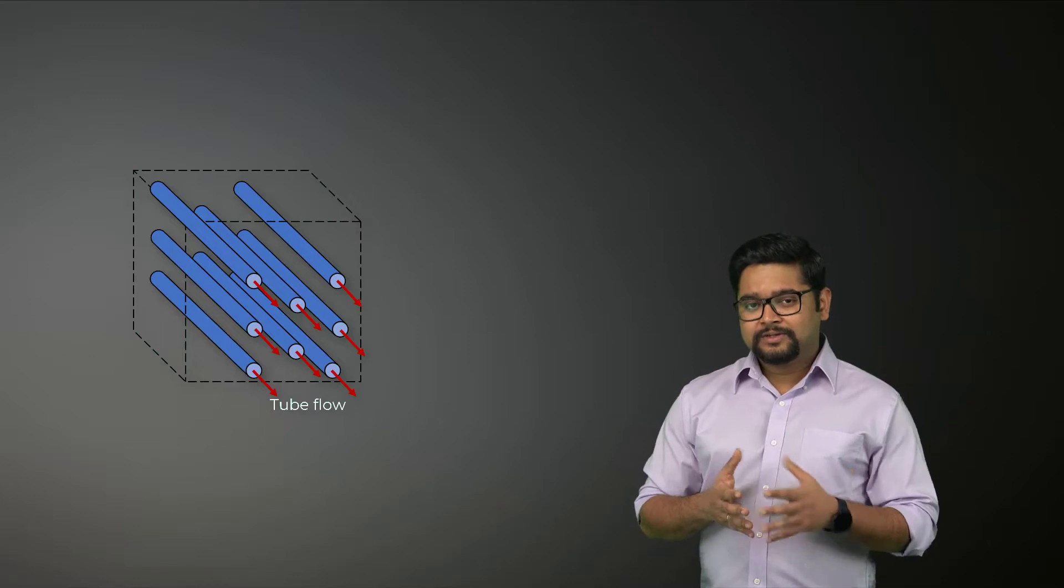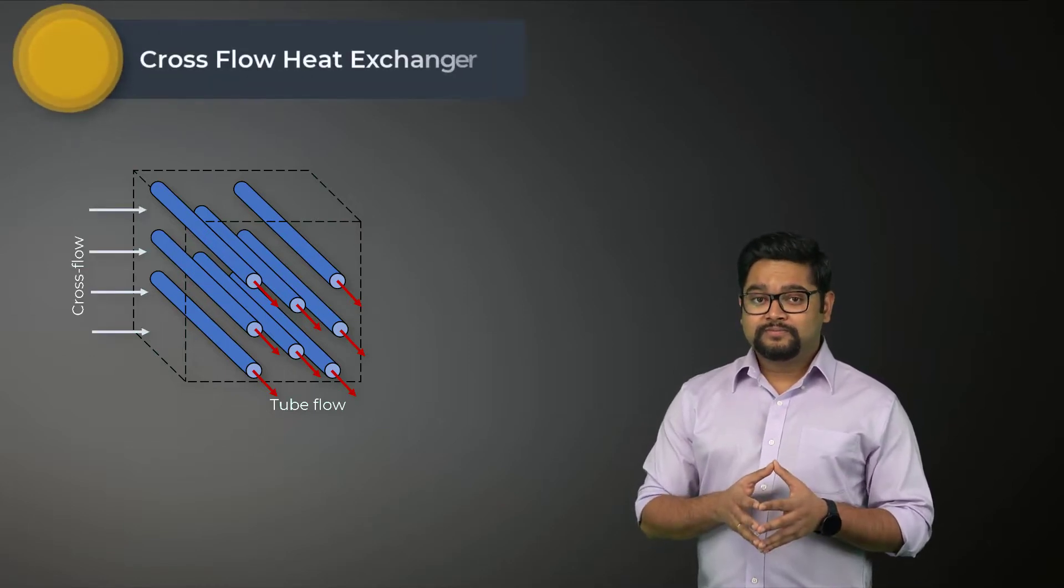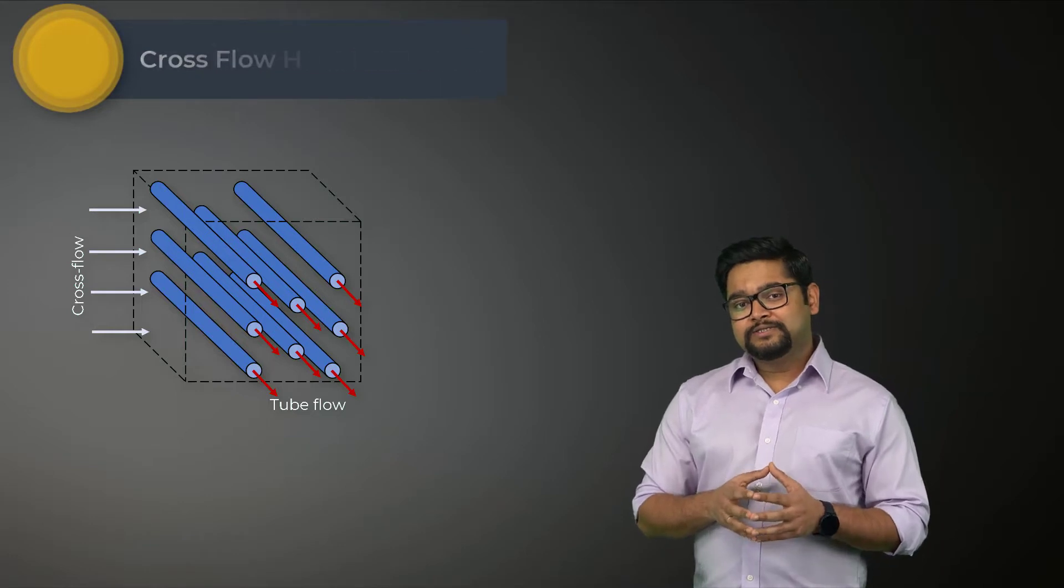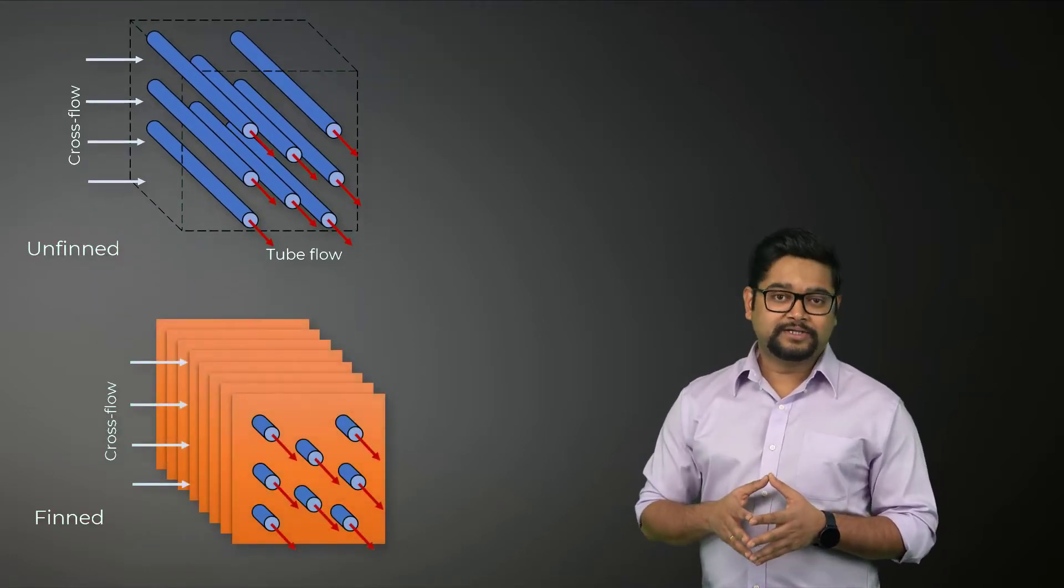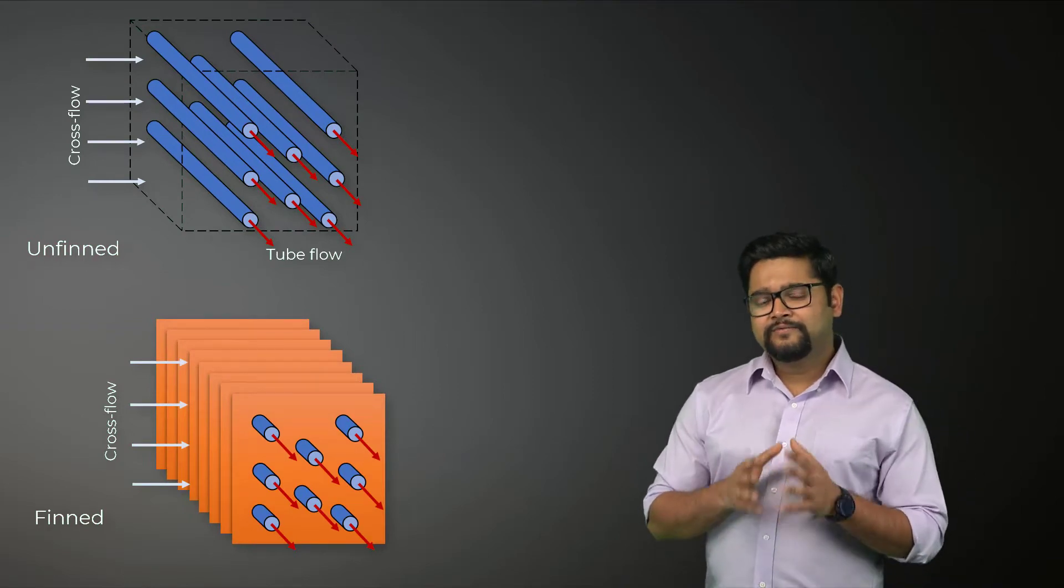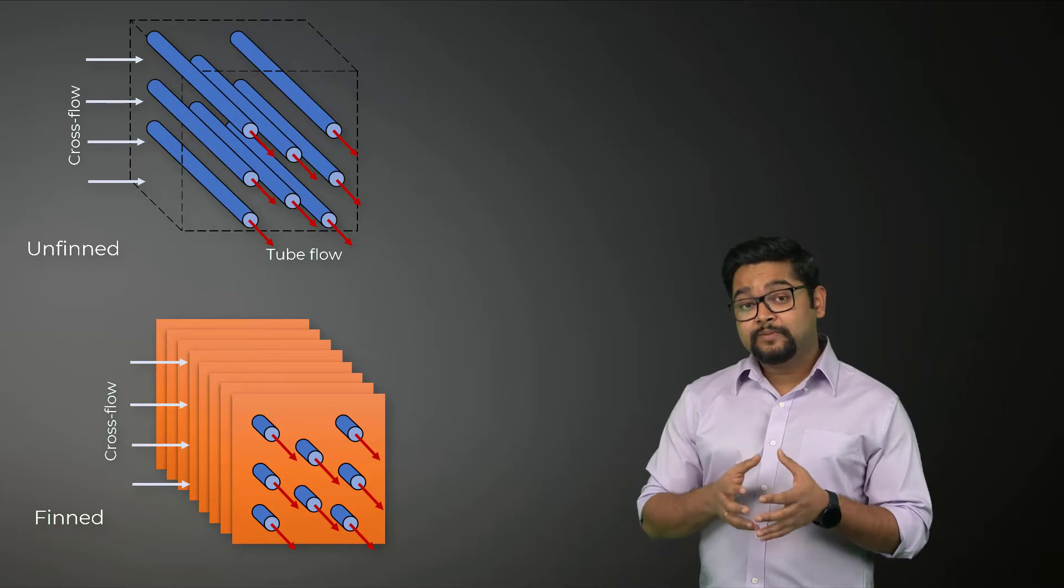The two fluids can also move perpendicular to each other. This flow configuration is known as cross flow. Cross flow heat exchangers are further classified as finned and unfinned heat exchangers. Fins are generally added to increase the total surface area available for heat transfer.